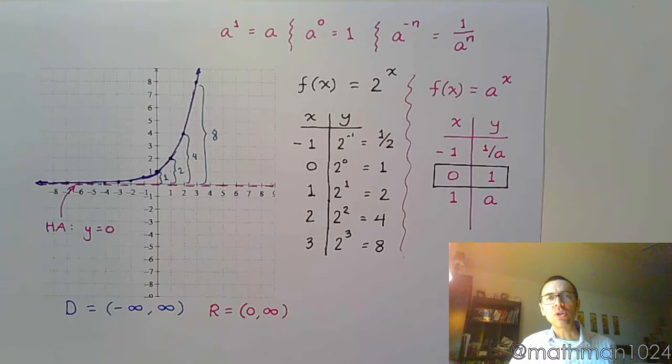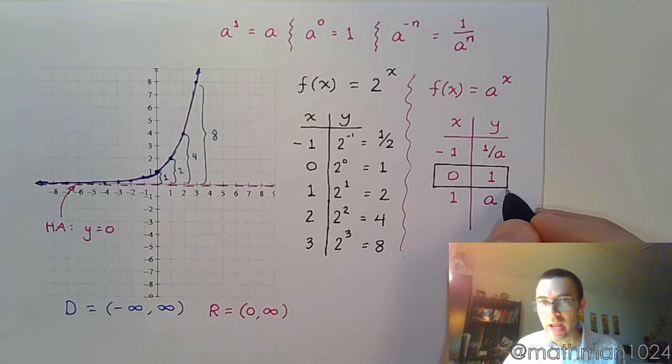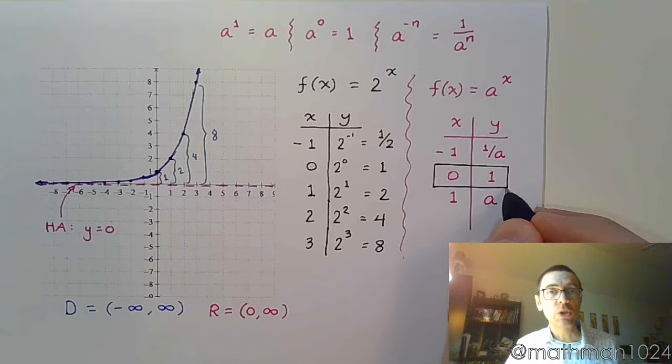A lot of the early parent functions that we saw had a key point, usually like a vertex, that was at the origin (0, 0). Well, we lost that when we were talking about rational functions, and we're losing that again here. We don't have (0, 0) as a point. What we have as our new anchor, our new base point, is going to be (0, 1).